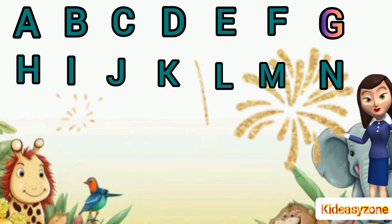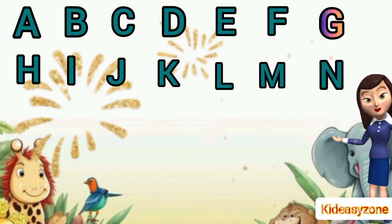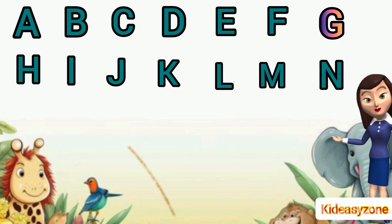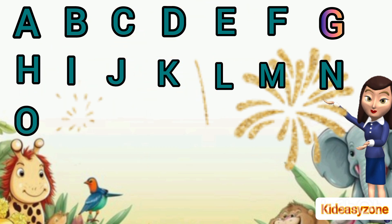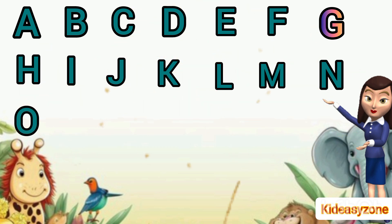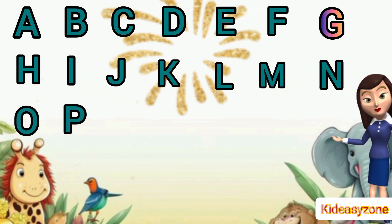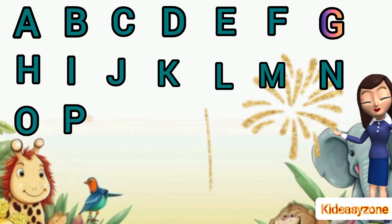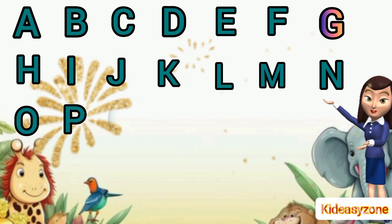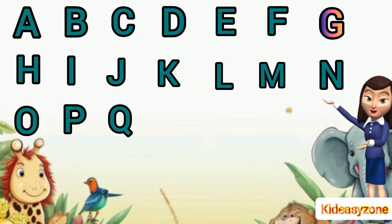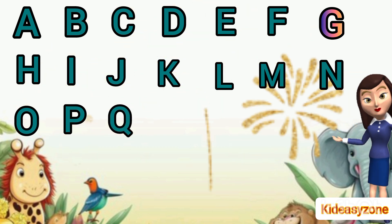N is for nest. O is for orange. P is for parrot. Q is for queen.